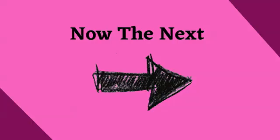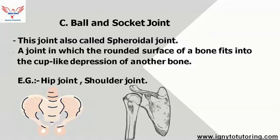The next type of joint is the ball and socket joint, also called the spheroidal joint. This means a joint in which the rounded surface of a bone fits into the cup-like depression of another bone.